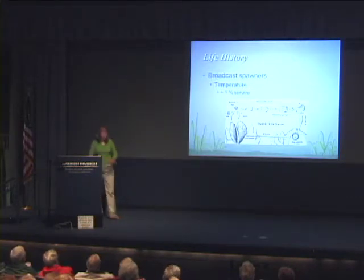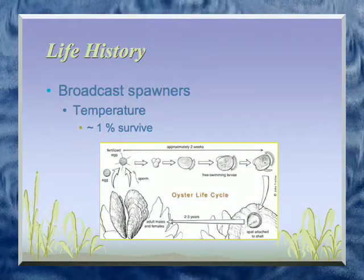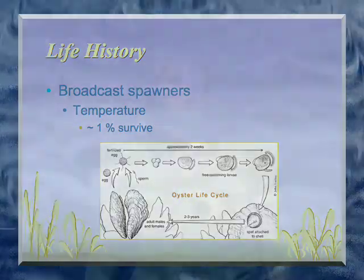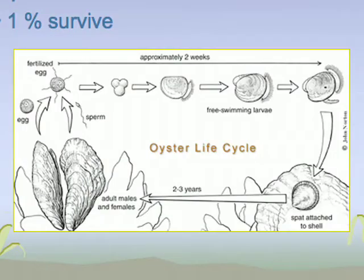Oysters are broadcast spawners. That means they release their eggs and sperm into the ocean, and fertilization takes place within the water column. There are a couple of species that keep eggs inside and release them after internal fertilization. Temperature plays a big role in when oysters or other bivalves spawn — when the temperature warms up is when they release their eggs and sperm. They are part of the plankton for the first two to six weeks of their lives, depending on the species, and are called zooplankton at that time.